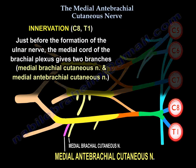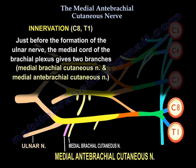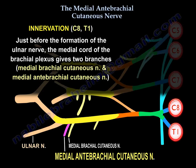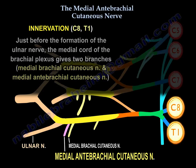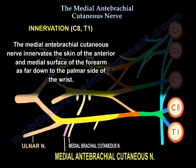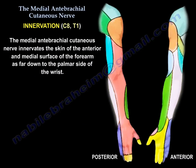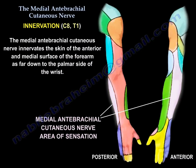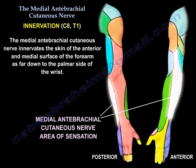Innervation C8-T1. Just before the formation of the ulnar nerve, the medial cord of the brachial plexus gives two branches: the Medial Brachial Cutaneous Nerve and the Medial Antibrachial Cutaneous Nerve. The Medial Antibrachial Cutaneous Nerve innervates the skin of the anterior and medial surface of the forearm as far down as the palmar side of the wrist. The area of innervation is indicated on the diagram — the volar side to the right and the dorsal side to the left.